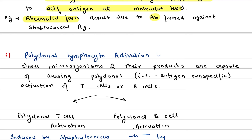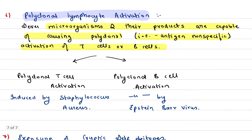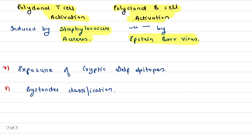Next is polyclonal lymphocyte activation. Certain microorganisms and their products are capable of causing polyclonal, antigen non-specific activation of T cells or B cells. Polyclonal T cell activation is caused by Staphylococcus, while polyclonal B cell activation is caused by Epstein-Barr virus. Two more mechanisms are: exposure of cryptic cell epitopes and bystander activation.